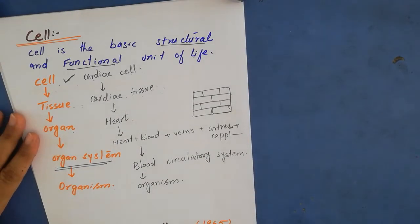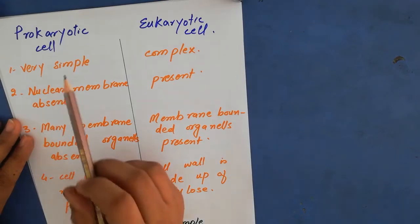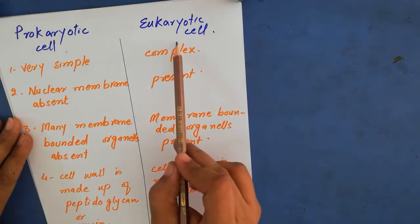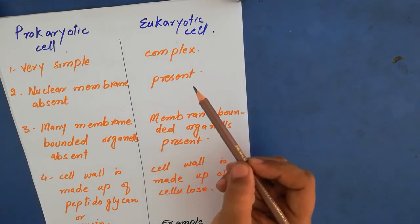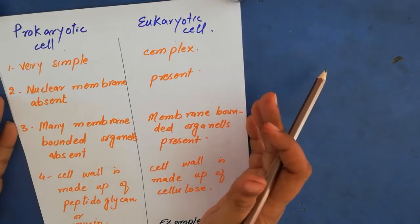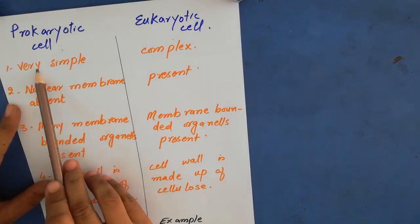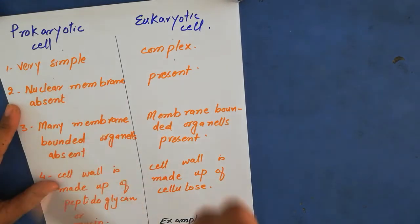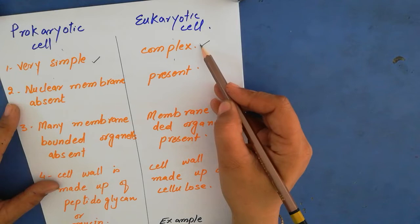Robert Hooke was the first scientist — in 1665, he observed the cell under the compound microscope. Now we have two major types of cells: prokaryotic cells and eukaryotic cells. The first difference between them is that the prokaryotic cell is a very simple type of cell, while the eukaryotic cell is complex.